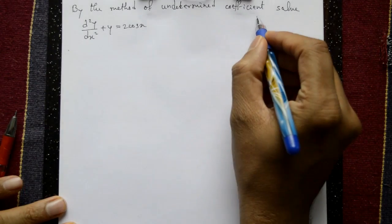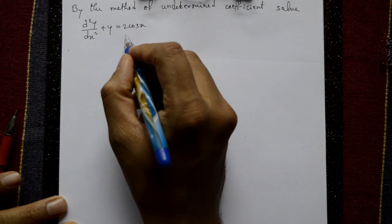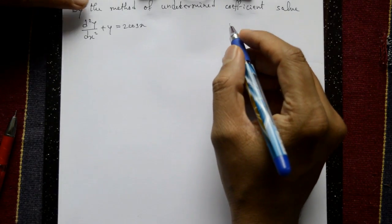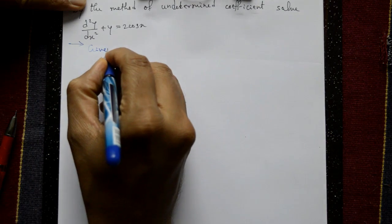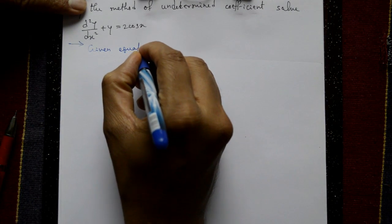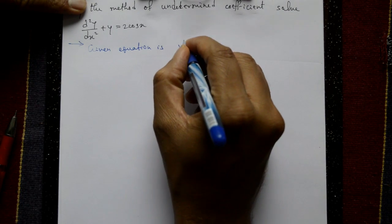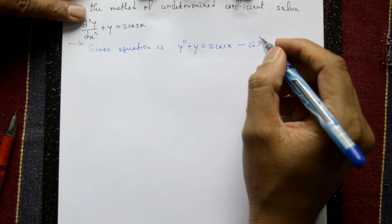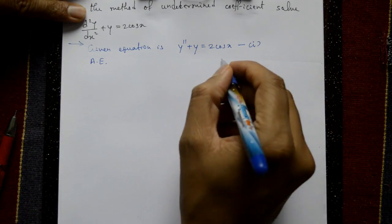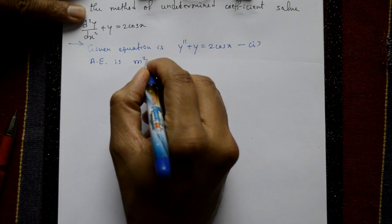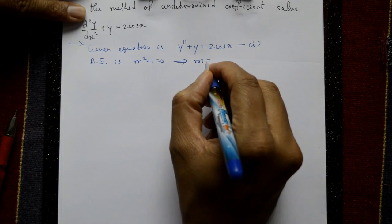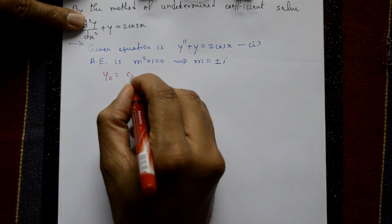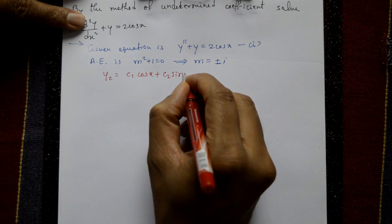Next problem: Solve by the method of undetermined coefficients — d²y/dx² + y = 2cos(x), find the complete solution. The given equation is y'' + y = 2cos(x) — equation number one. The auxiliary equation is m² + 1 = 0, giving m = ±i.